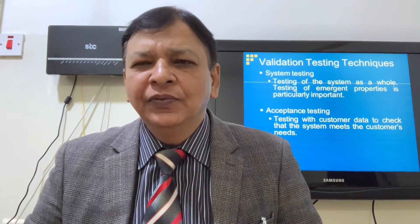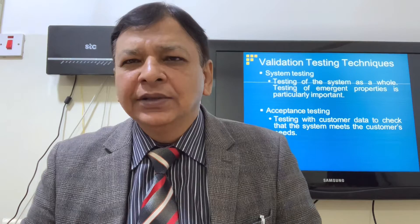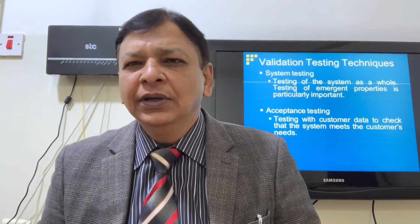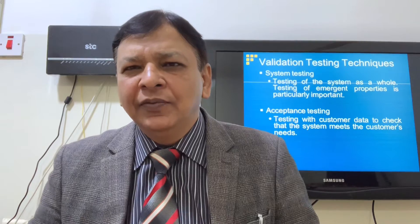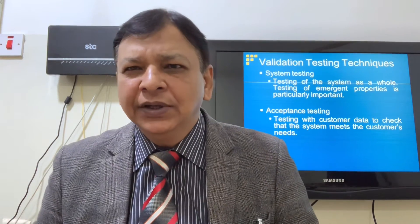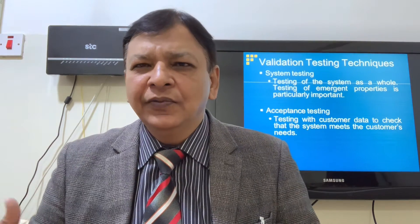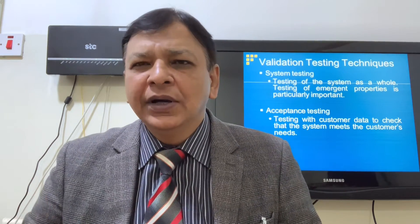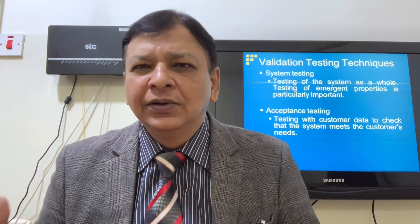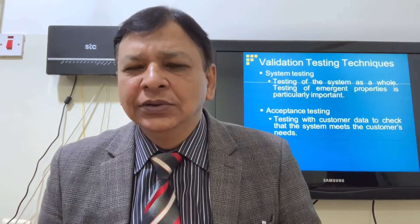In acceptance testing, we call the customer to test the software. We have two ways: alpha testing and beta testing. In alpha testing, we call the customer to the software company site to test in front of the team and the developers. It is also called controlled testing, contrived testing, or lab testing.